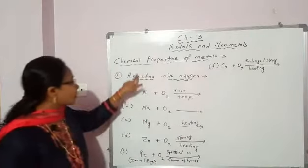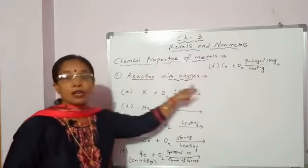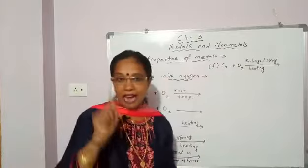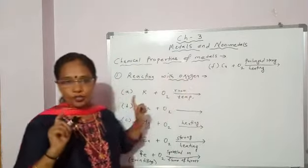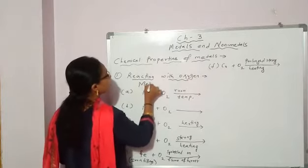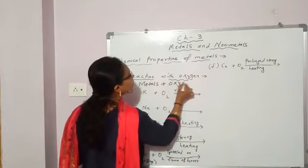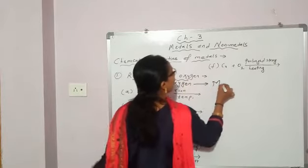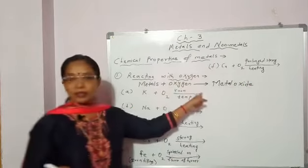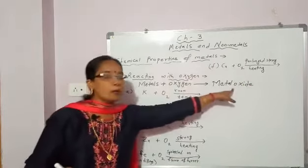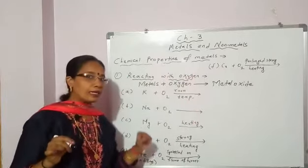Today we start with the chemical properties of metals. First reaction: reaction with oxygen. Metals react with oxygen and form metal oxide. We will take some examples to make it clearer.